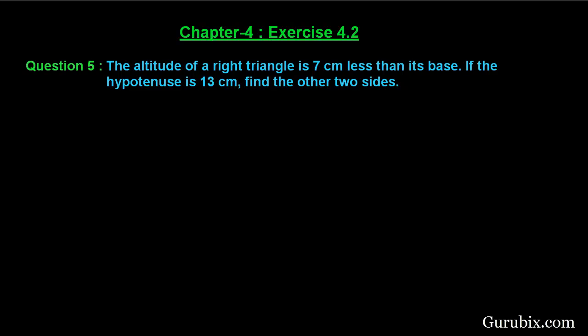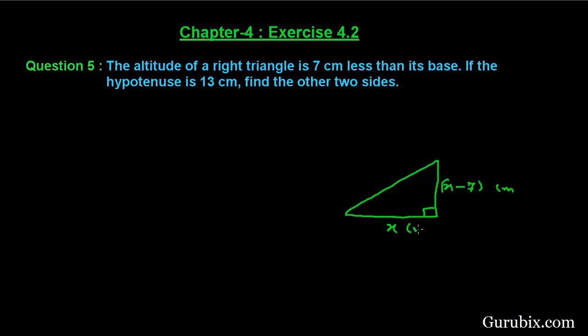Let us solve question number 5 of exercise 4.2 of chapter 4. This is a very important question from an examination point of view. The question is: the altitude of a right-angled triangle is 7 centimeters less than its base. Let us draw it — suppose this is our right-angled triangle. Let the base be X, then the altitude is X minus 7 centimeters. The hypotenuse of the right triangle is 13 centimeters.